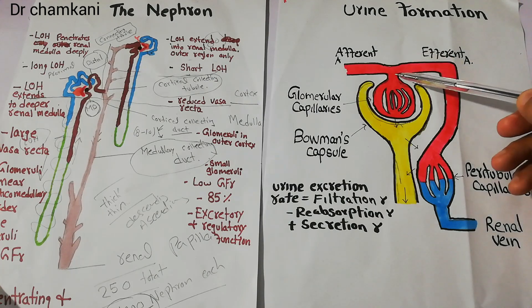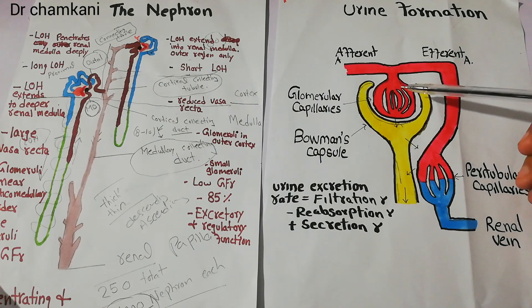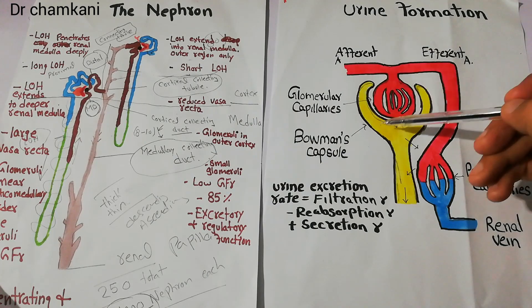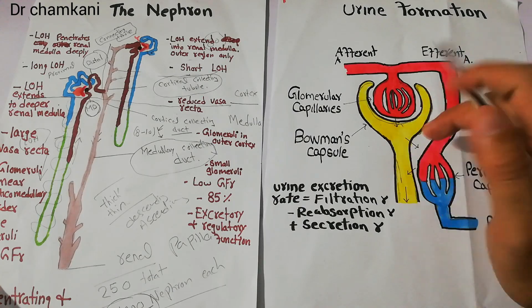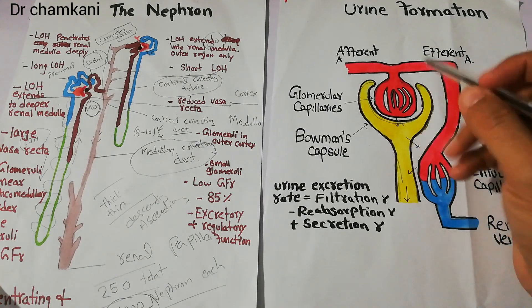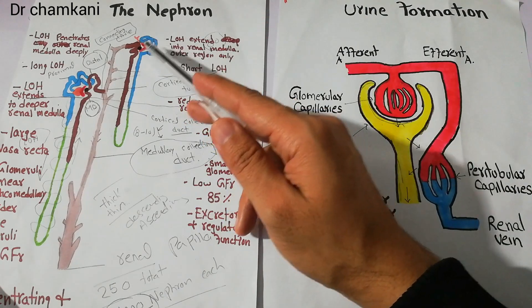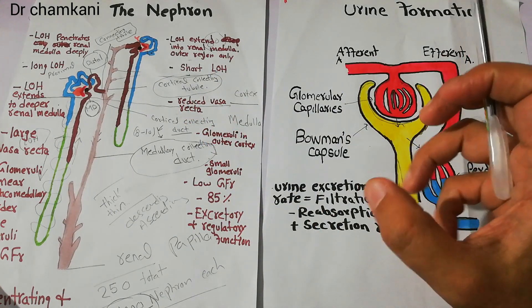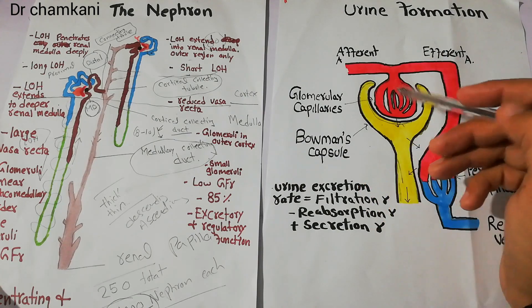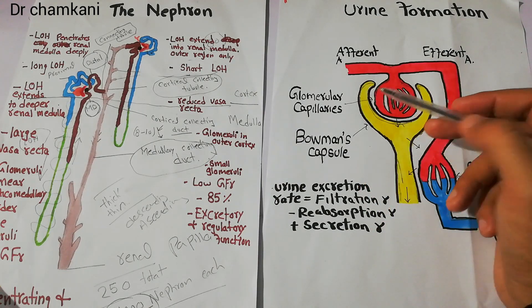Once the blood has been filtered this process is known as filtration. So the first step in urine formation is filtration, which occurs at the glomerulus. The blood comes here, it is pressurized — like squeezing the blood — and due to that the plasma, the filtrate, comes out and goes into the Bowman's capsule.